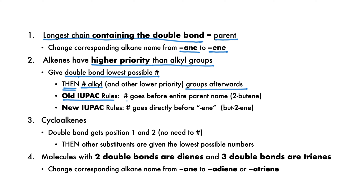In old IUPAC rules, the position of the double bond goes before the entire parent name. In new IUPAC rules, the position goes right before the -ene part of the parent. You would use the name 2-butene in the old IUPAC rules and but-2-ene in the new IUPAC. Most books still use the old IUPAC rules, so we will too.